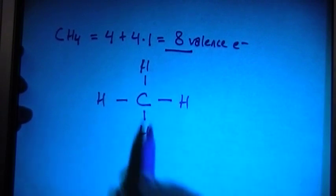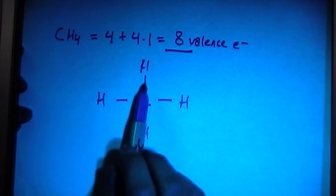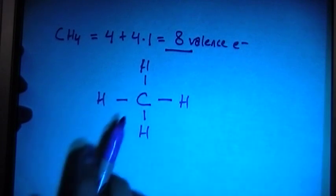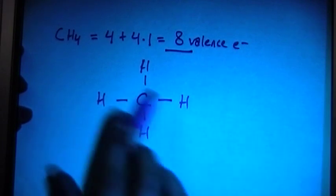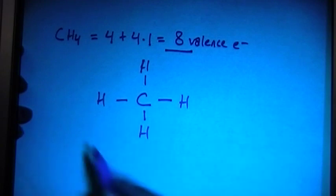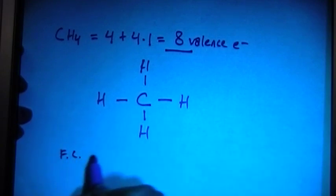This is it. And if you notice, hydrogen has two electrons, which is what it's supposed to have, and the carbon has the full octet with eight. So we can go ahead and check the formal charges if you want, just to show you.